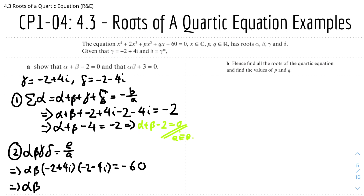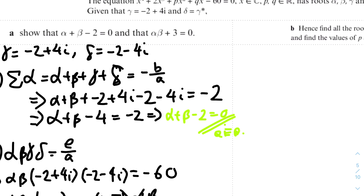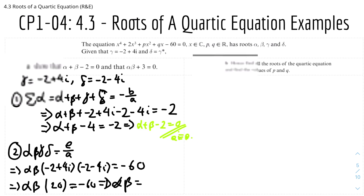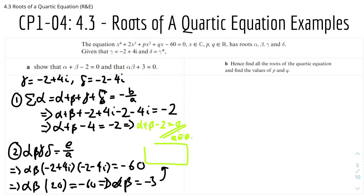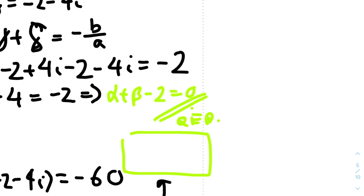Therefore αβ = −3, which means αβ + 3 = 0. QED.